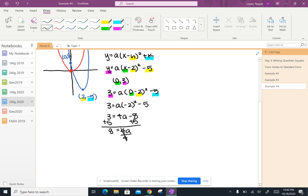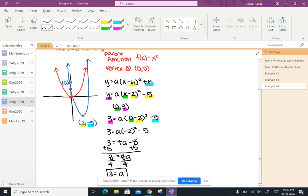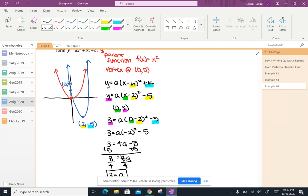And I get eight equals four a. To finish this off, I'm going to divide both sides by four. Eight divided by four is two, so I get two equals a. So that means then that the stretch is going to be two.